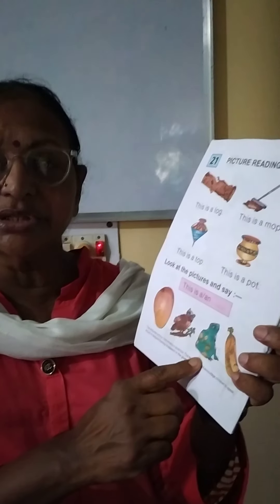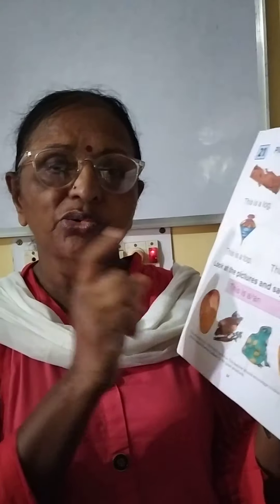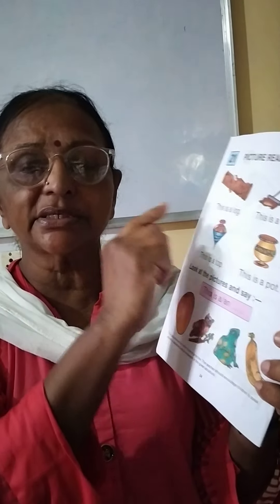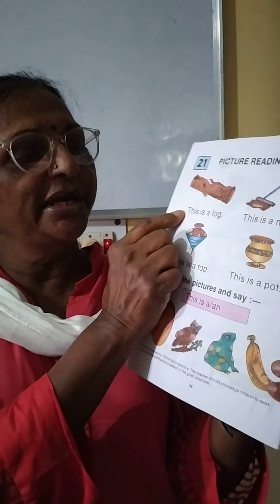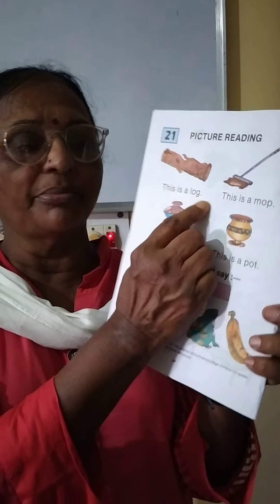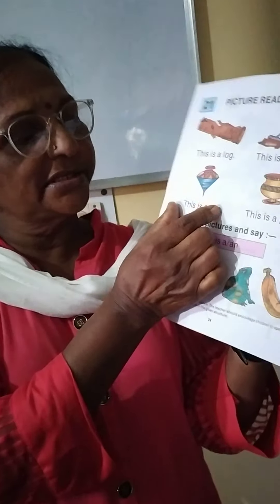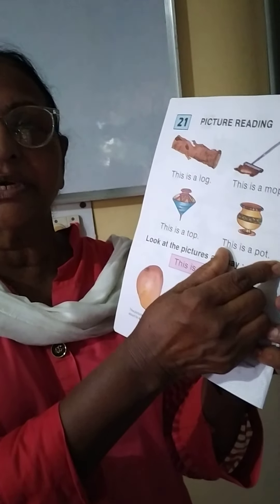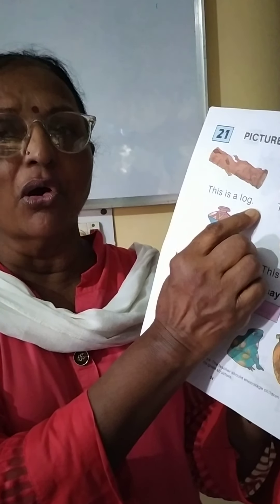Now once more we will read the whole thing. It is only for reading. You can ask anyone at home to help you keep your finger on the book and read these sentences. These are complete sentences, children — they begin with a capital letter and end with a full stop. This is a log. Log means part of a tree.